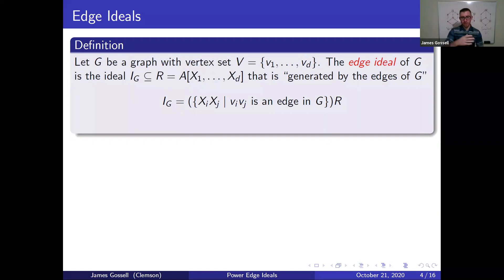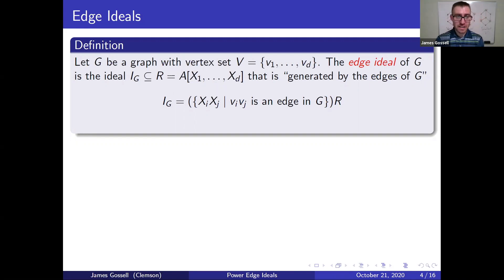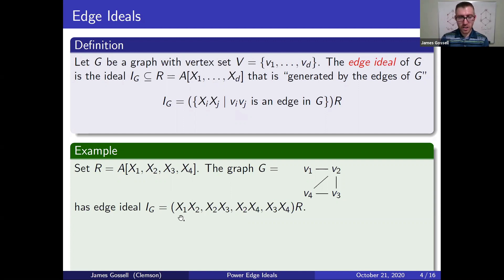Moving to the algebra — I want to define the edge ideal. Given a graph with D vertices, we can think about a polynomial ring with D variables, each variable corresponding to one of the vertices. Here k can be thought of as a field, perhaps the complex numbers or the real numbers. We define the edge ideal I_G in our ring as the ideal generated by all of the edges in the graph. For example, with a four-edge graph, the edge ideal is generated by x_1 x_2, x_2 x_3, and so on.